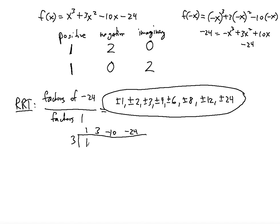First we bring the 1 down. Then we multiply 1 by 3 and add it to the top 3 to find the next term: 3 plus 3 equals 6. Now we multiply 6 by the divisor 3, and add the product to negative 10: 6 times 3 is 18, and 18 minus 10 is 8. Again, we multiply 8 by 3 to give us 24, and add it to negative 24. So 24 minus 24 equals 0. That means x equals 3 is indeed a zero, or root, of this polynomial.